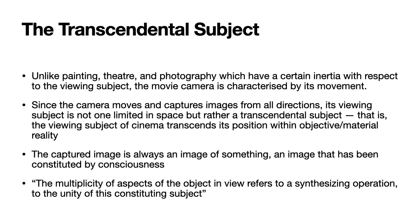This is again important — we are not talking about where you should be sitting in the movie theatre. What Baudry is saying is that wherever you sit in the theatre, what you see is what has been captured by the movie camera. In a sense, the person sitting in the theatre is not the viewing subject; rather, the viewing subject is identical with the eye of the camera. Since the camera moves and captures images from all directions, its viewing subject is not one that is limited in space, but rather a transcendental subject.